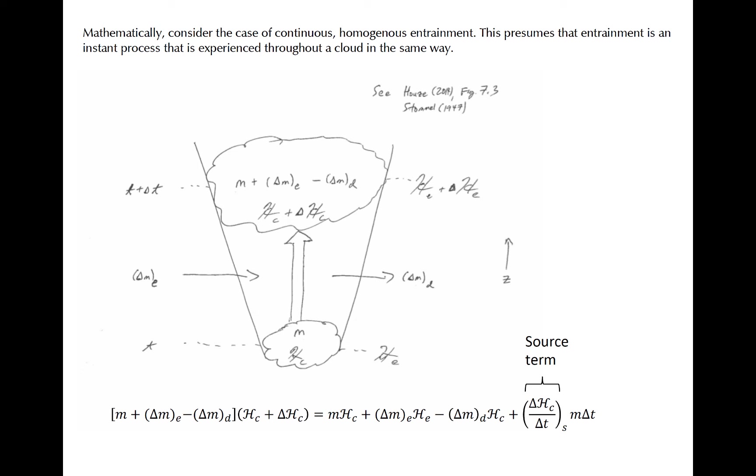Let's consider the simple, idealized case of continuous, homogenous entrainment. This means that the entire cloud feels the effects of entrainment in the same way. This is obviously a gross oversimplification, but it is sufficient for describing how entrainment of dry air inhibits vertical growth of convection. At the bottom of the figure is a cloud that exists at some time t and has some mass m and any variable related to the enthalpy of the cloud denoted by the scripted H. Subscripts C and E respectively mean cloud and environment. We could treat the scripted H as if it represents momentum, moist static energy, or moist enthalpy in the cloud.